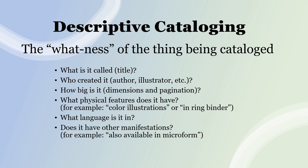Descriptive cataloging is the whatness of a thing that's being cataloged. What is it called? Who created it? How big is it? What physical features does it have — does it have pictures, is it in a ring binder, is it fuzzy? What language is it written in? And does it have other manifestations, like can you also get it in microform or as an e-book? Those are all elements of the whatness of the thing and fall under the category of descriptive cataloging.